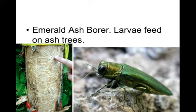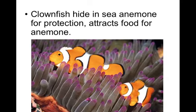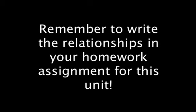Number seven: clownfish hiding in sea anemone for protection, which attracts food for the anemone — a Finding Nemo type relationship. What relationship is this? Make sure you include all of these relationships on your homework assignment that has been assigned to you. Thank you and have a good day.